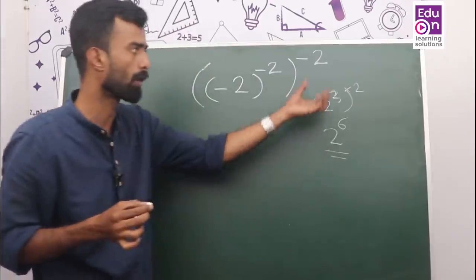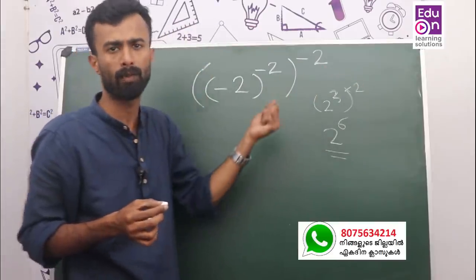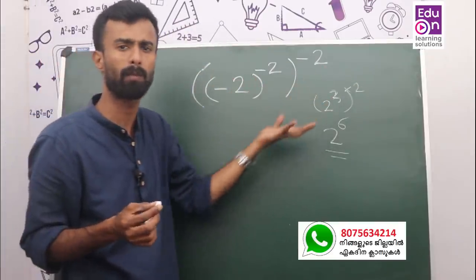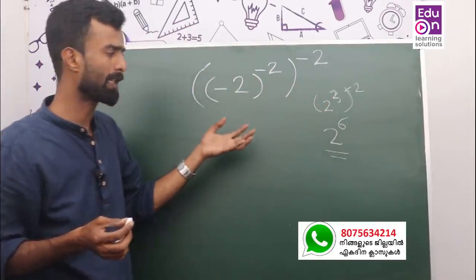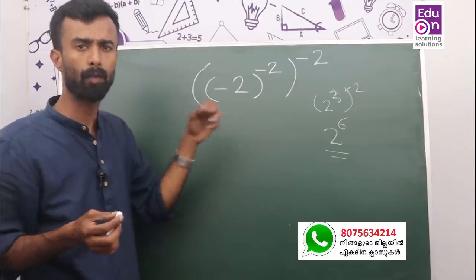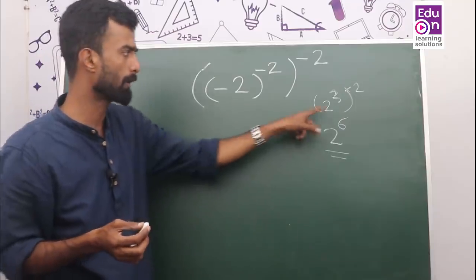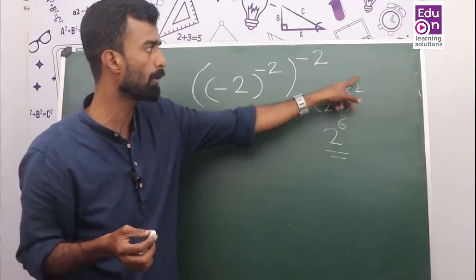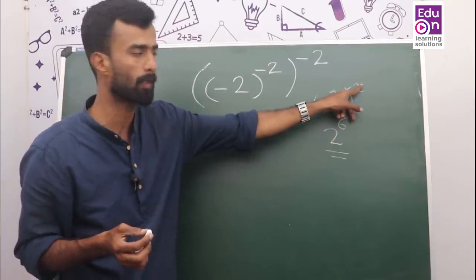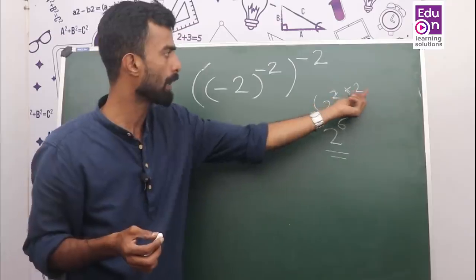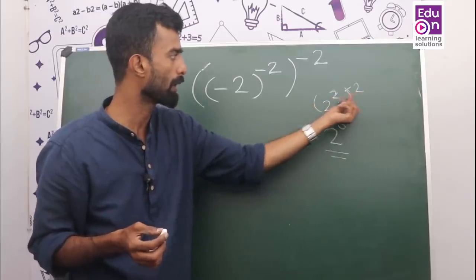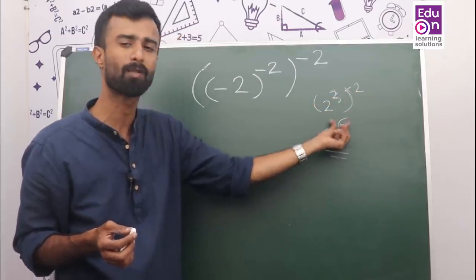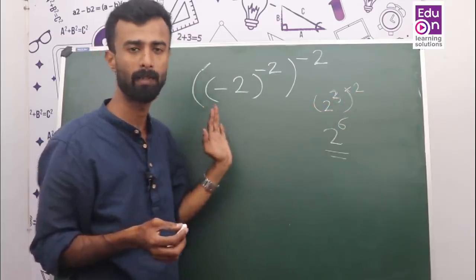2 and 3 — similarly 2 and 3 gives 2 raised to 6. The general rule is: A raised to M, all raised to N. One number with one power, raised to another power — you multiply the two powers: 3 and 2 multiplied gives 2 raised to 6.